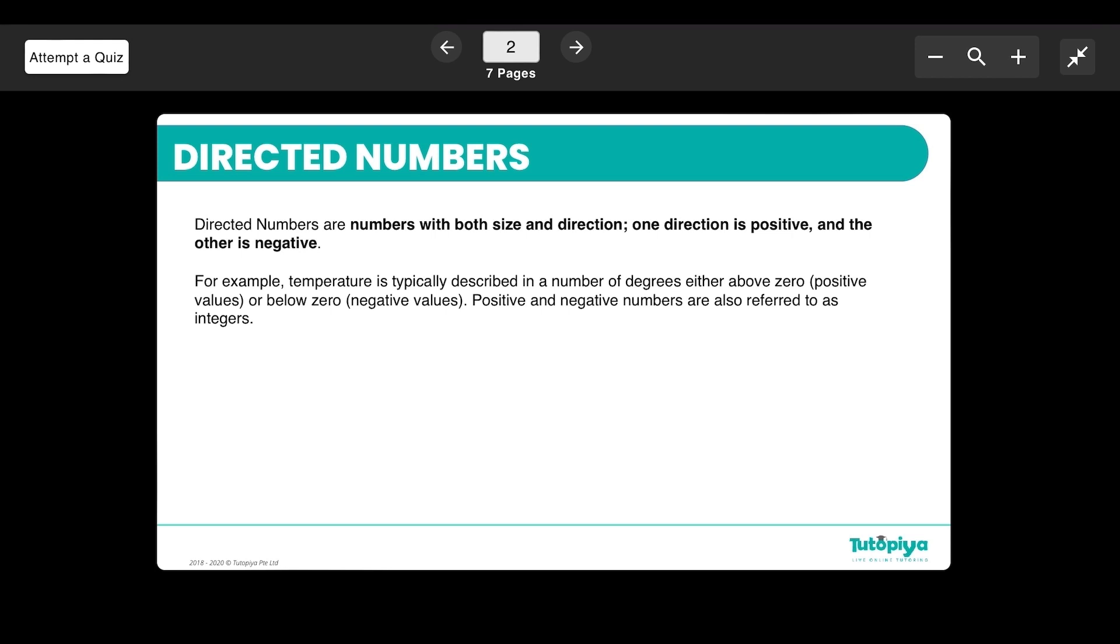Directed numbers are basically numbers with both size and direction. You can have the positive side and the negative side. One of the most common examples is temperature, because we often talk about different places where the temperature in one place is higher or lower than another. We use negative and positive numbers to indicate this.